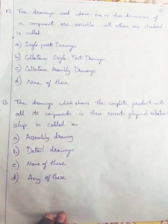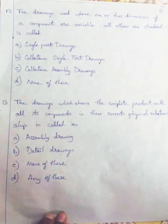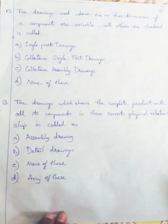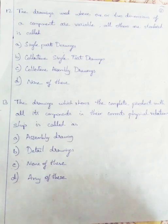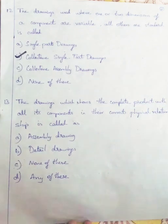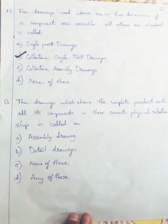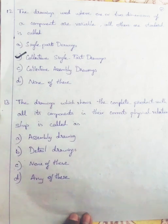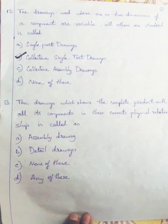Question 12: Drawings used where one or two dimensions of a component are variable and others are standard are called Collective Single Part Drawings. There will be a slight difference in some dimensions among components, and those components come under collective single part drawings.